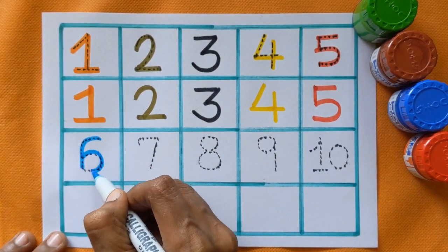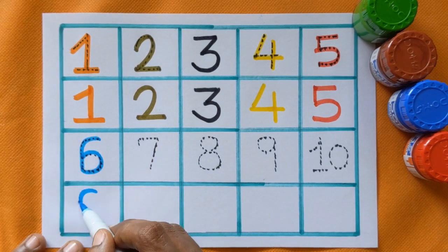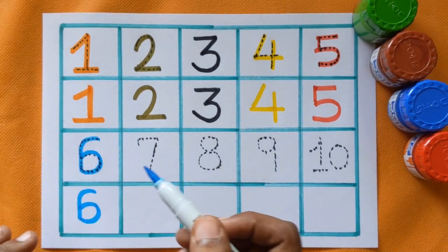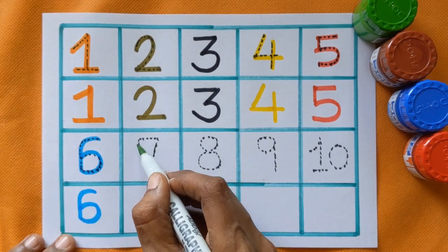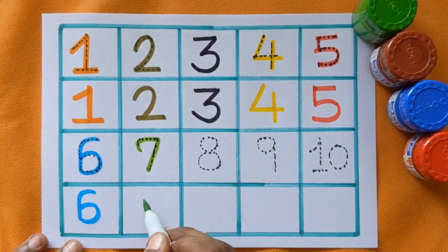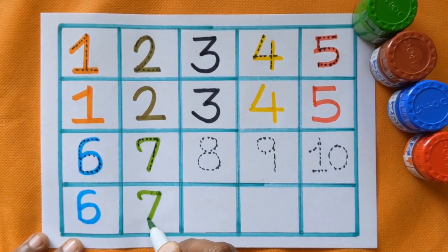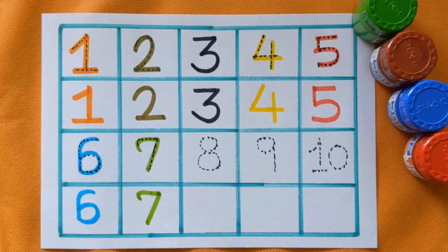Next is number 6, number 6 with a blue color. 7, which number is this? Number 7 with light green color.